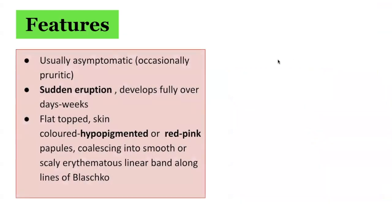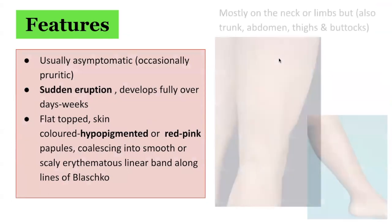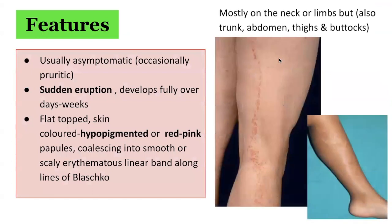In terms of the features of lichen striatus, it is typically asymptomatic, but intense itchiness and pruritus can occasionally occur. The eruption consists of a continuous or interrupted bands of discrete and clustered pink, skin-colored, or tan papules that are flat-topped, smooth or scaly, and can range in size from 2 to 4 mm. Infrequently, vesicles may be present.